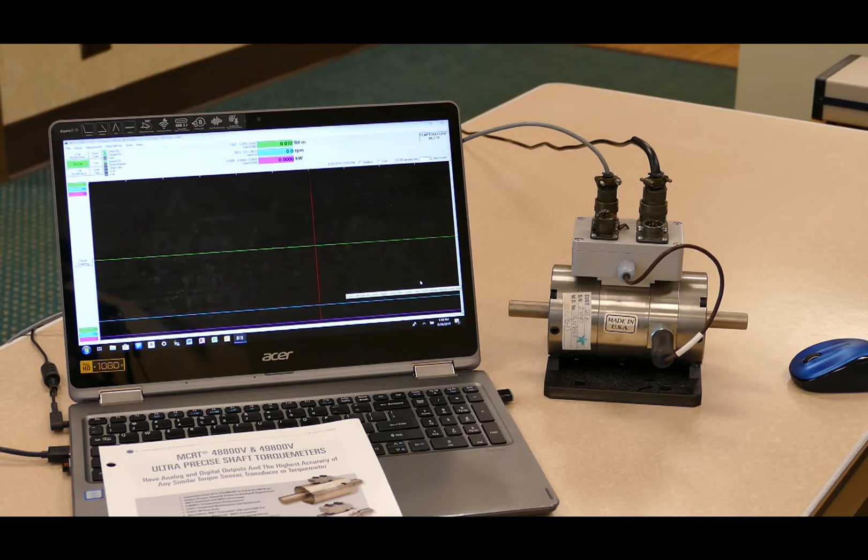We also have a range of models available with a dual range output, so you can have both a high range and a low range fully calibrated output signal to minimize changeover of transducers when testing different sized products or testing under different conditions, increasing the dynamic range of measurement of a different transducer.